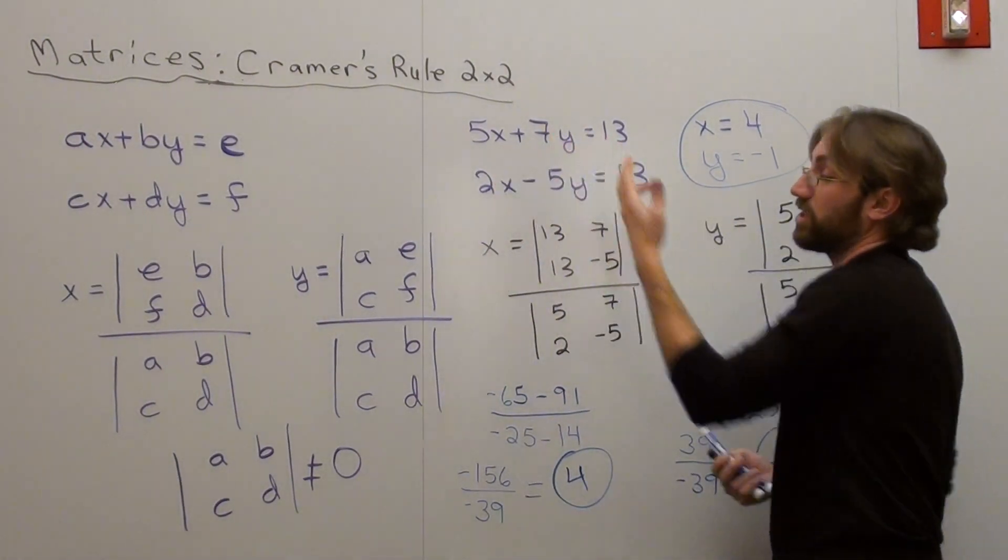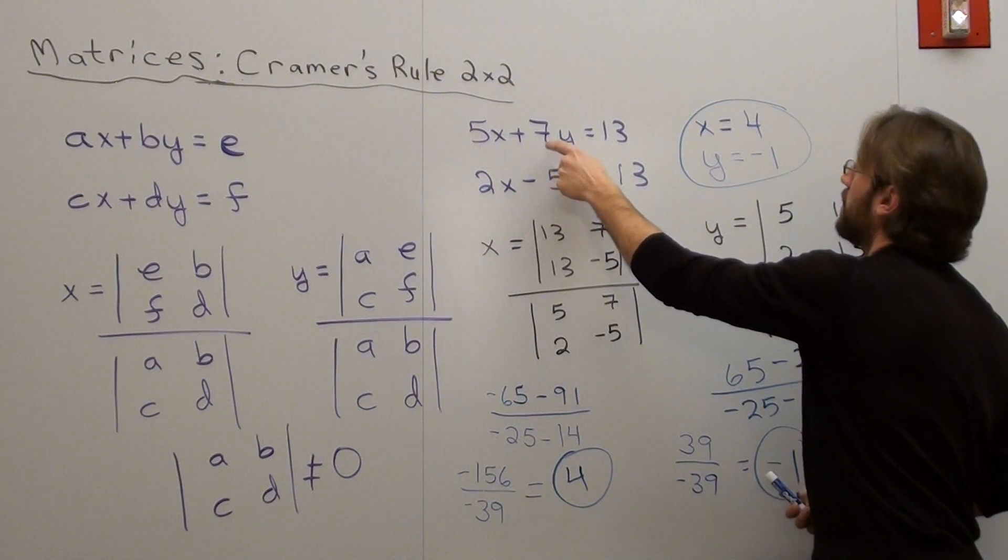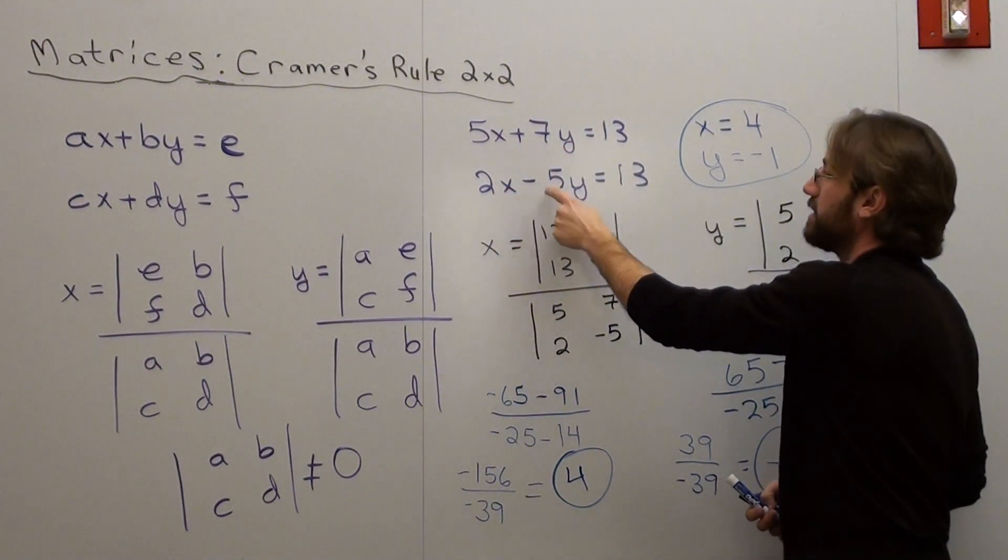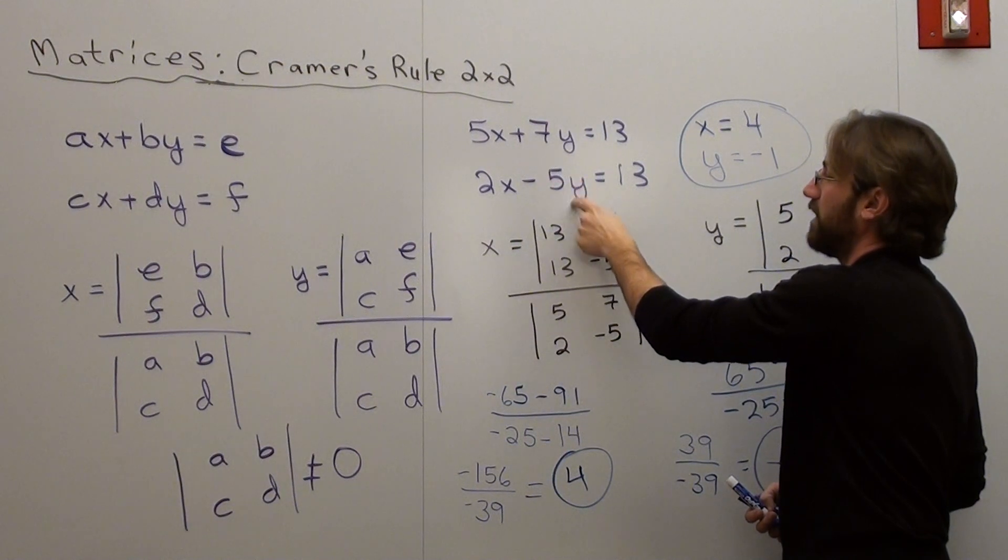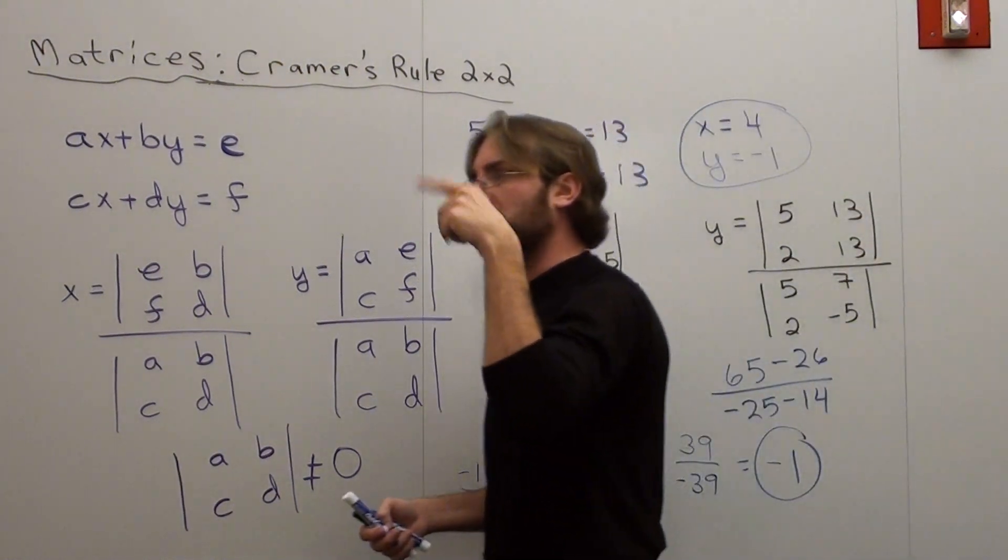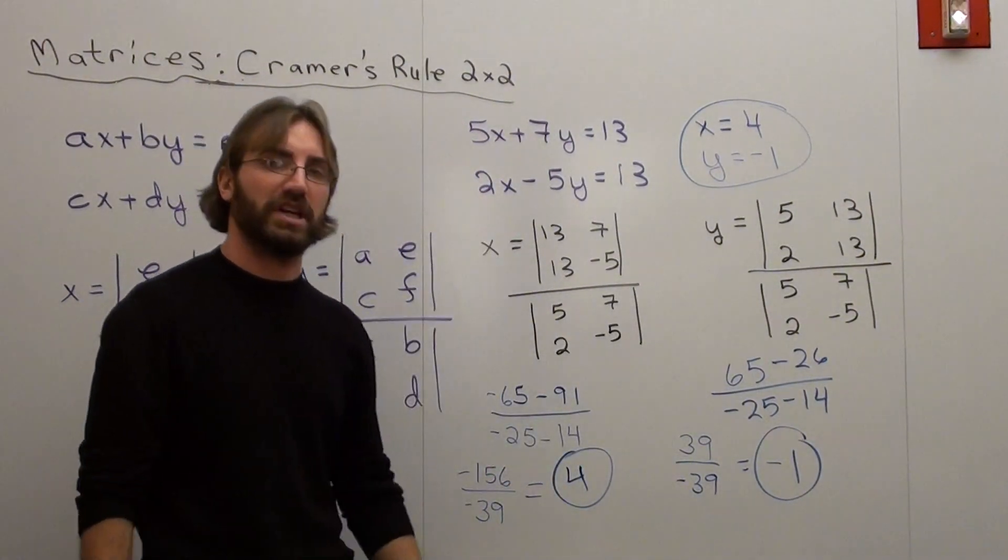Now, believe me, go ahead and plug it in, or substitute it in. 20 plus negative 7 is 13. That's true. 8 subtracted by negative 5 is 13. Yeah, so it's 8 plus 5, which is 13. The story checks out.